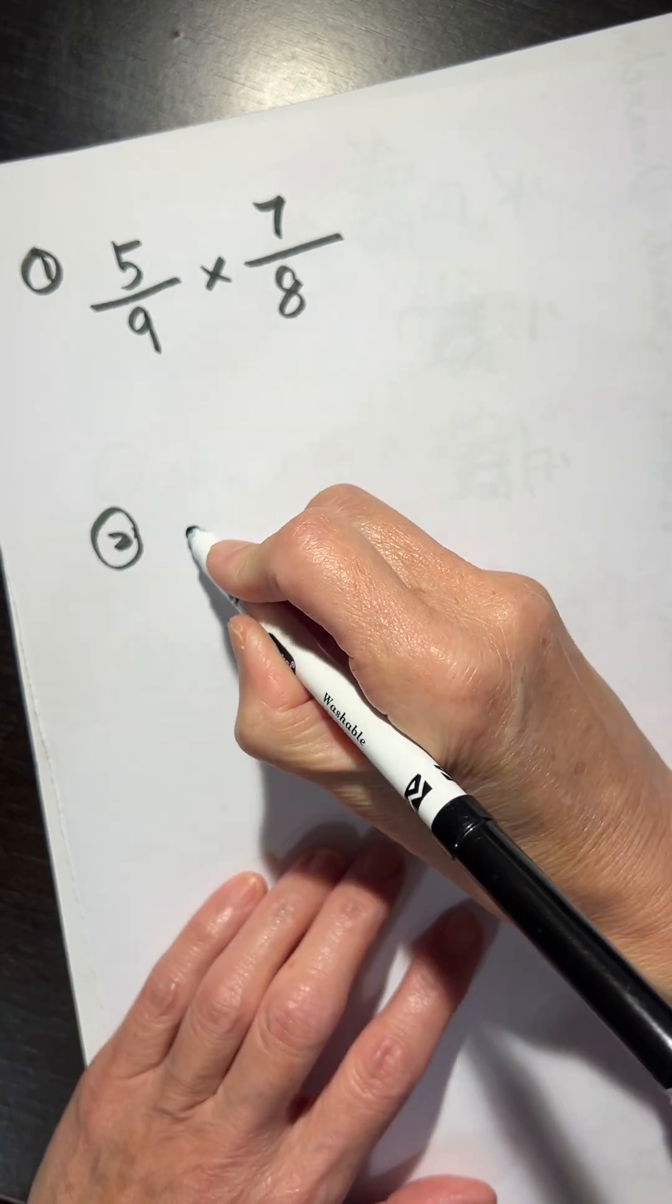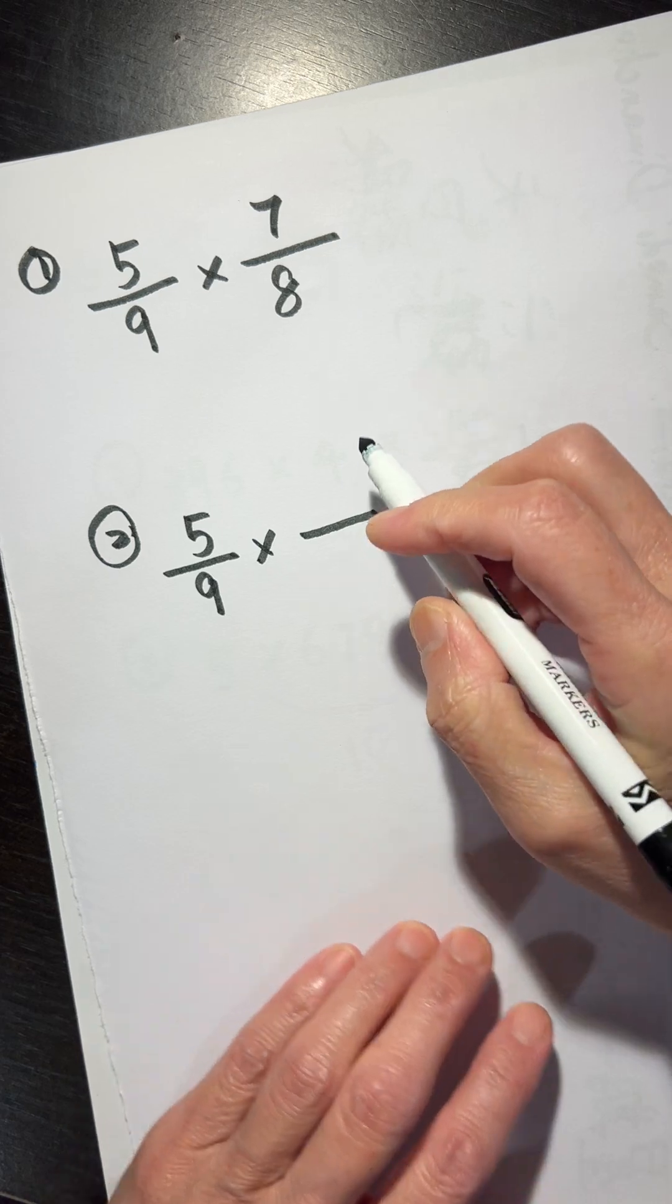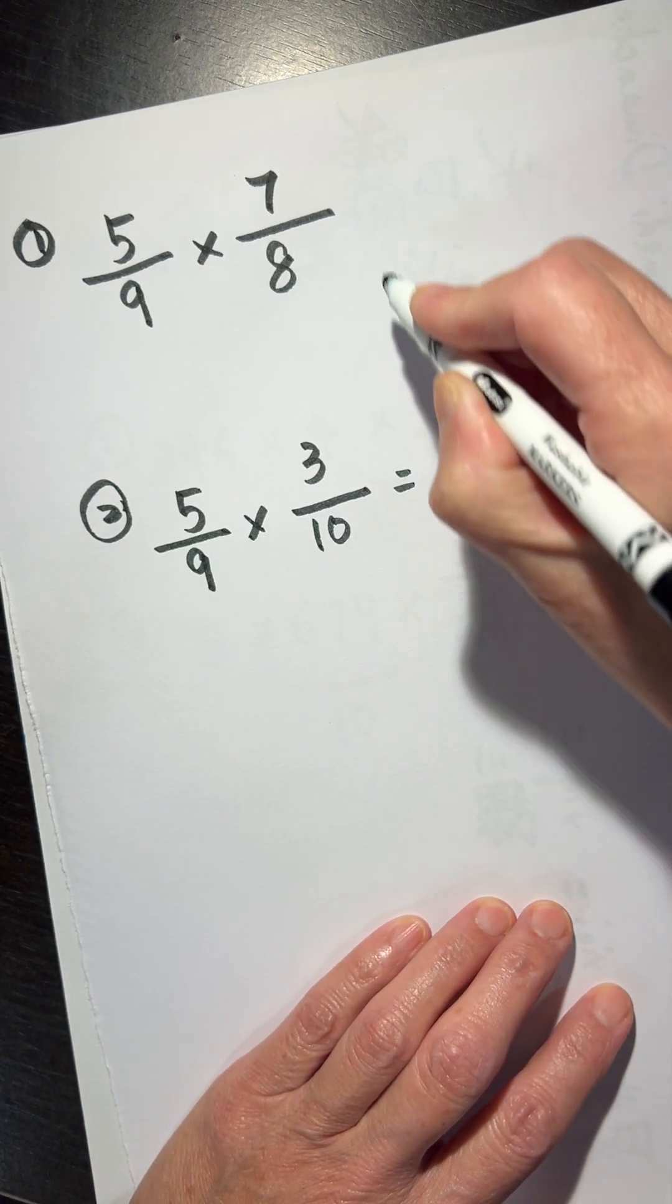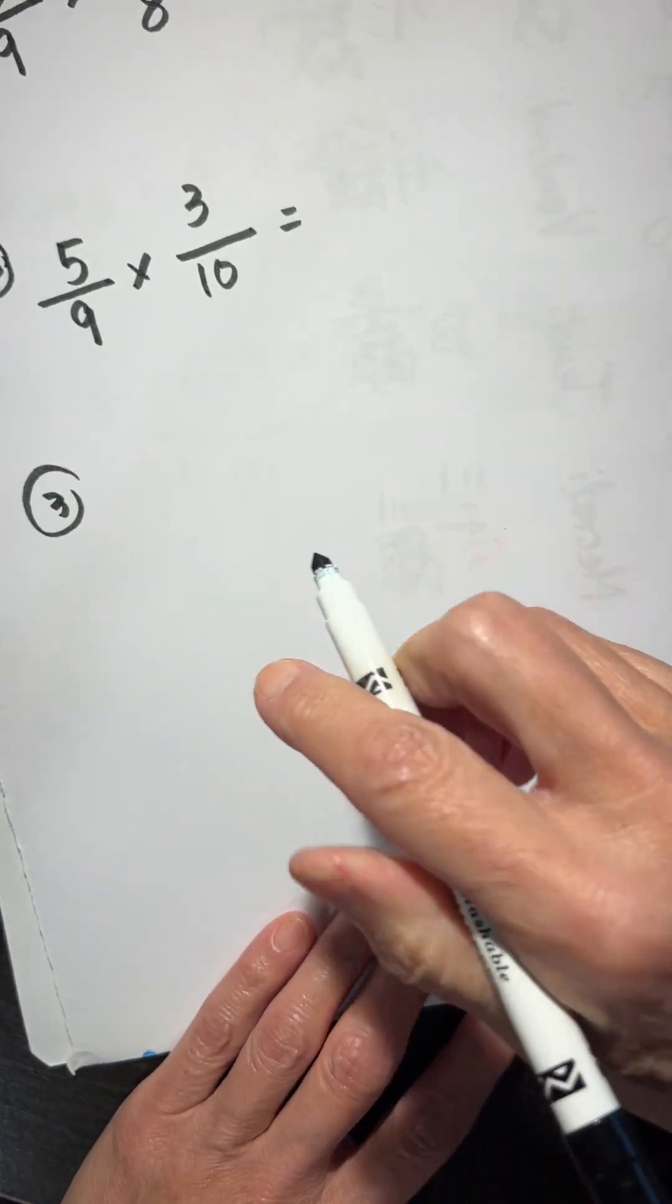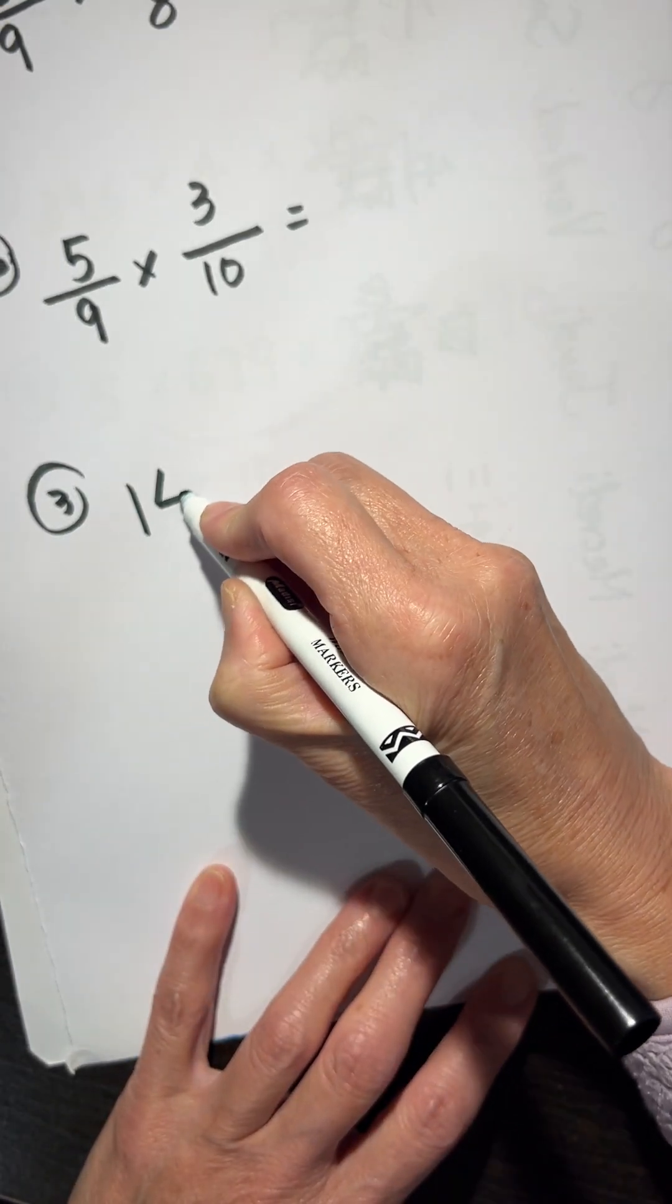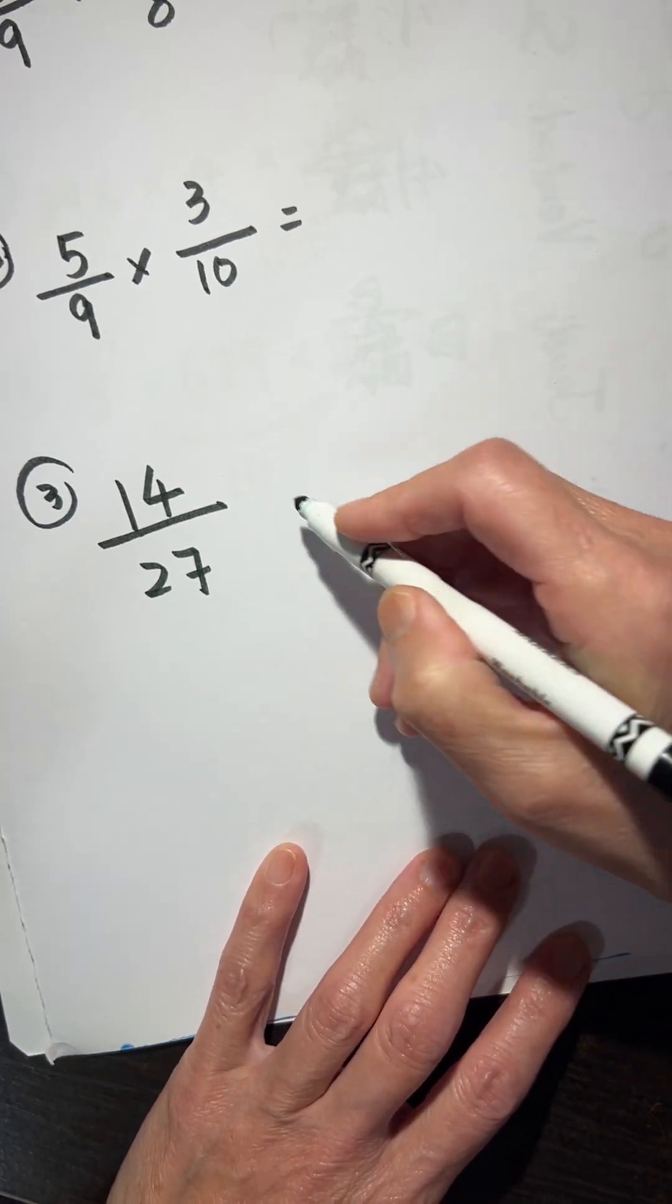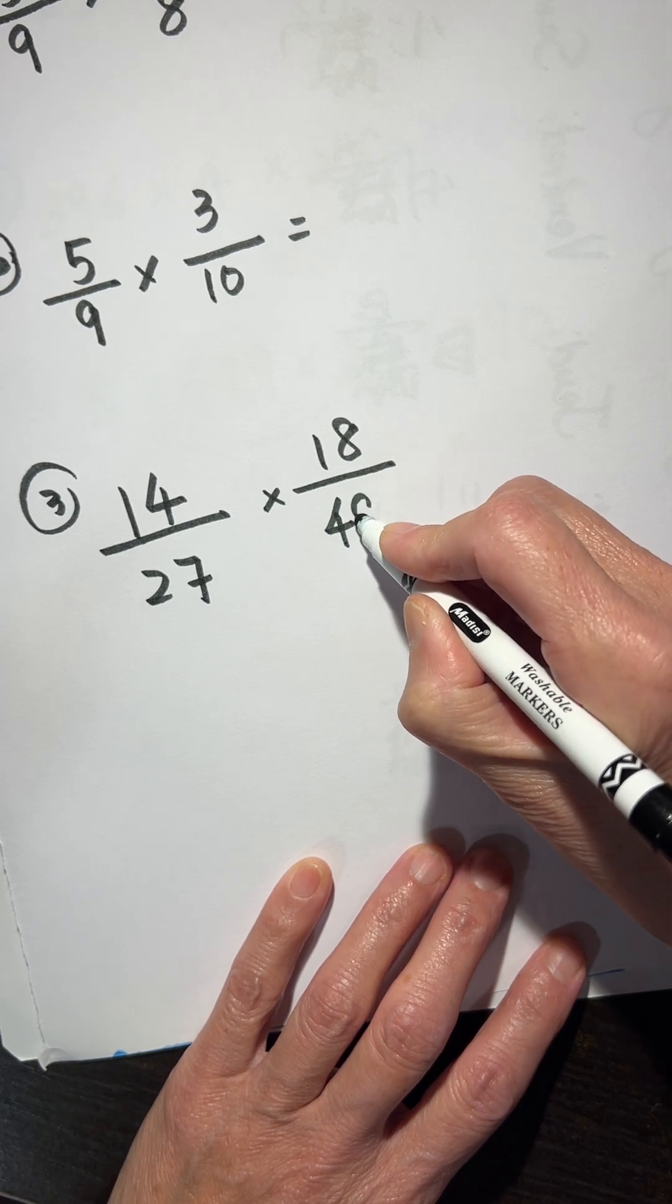The second one, 5 over 9, the same number, times 3 over 10. And the third one, a little bit complicated, 14 over 27 times 18 over 49.